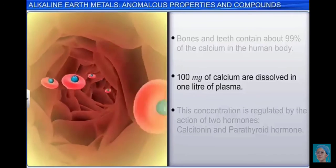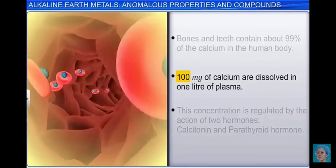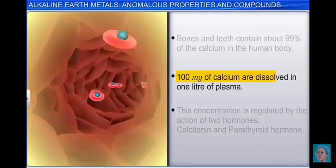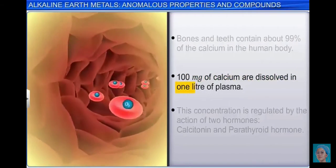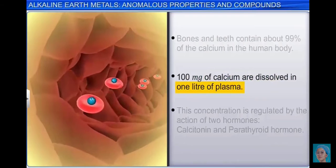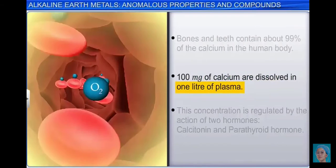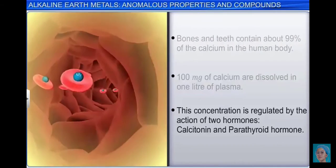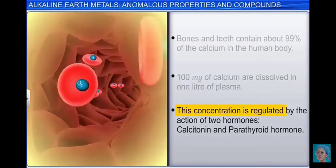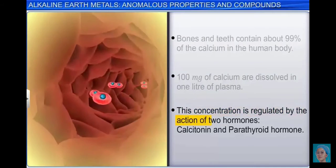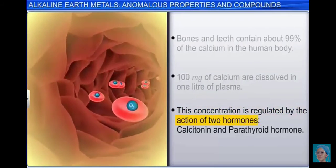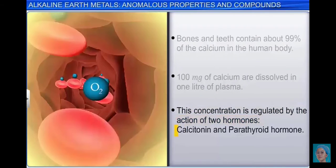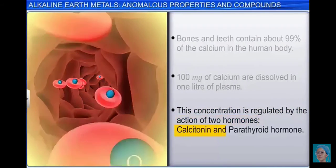Approximately 100 milligrams of calcium are dissolved in 1 liter of plasma. This concentration is regulated by the action of two hormones: calcitonin and parathyroid hormone.